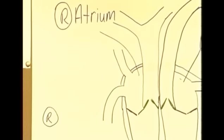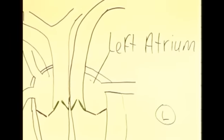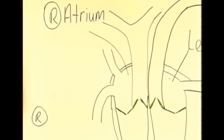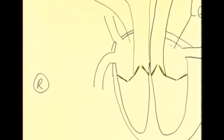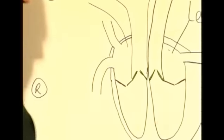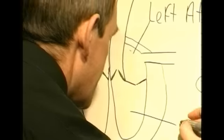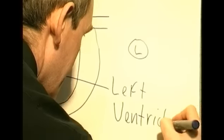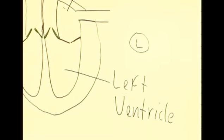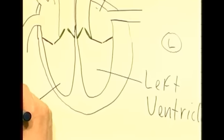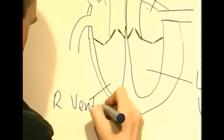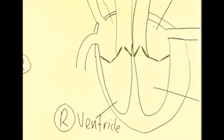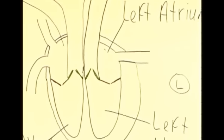They are the top chambers of the heart. Now the lower chambers are larger chambers and they're referred to as ventricles. This chamber here is the left ventricle, and the lower chamber on the other side is the right ventricle. So: left and right atrium, left and right ventricle.